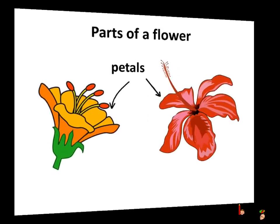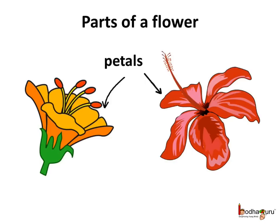Next to the sepals is the most beautiful and colourful part of the flower — the petal. The petals are bright in colour. The petal protects the inner parts of the flower and attracts insects. Now why does the flower need to attract insects? Let us understand this.